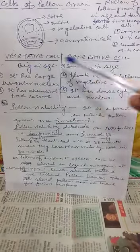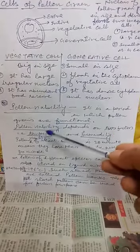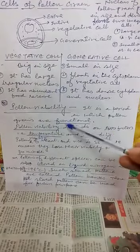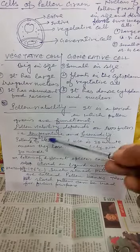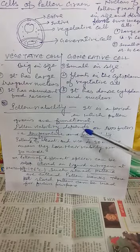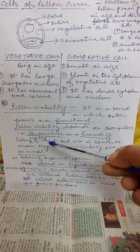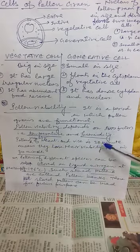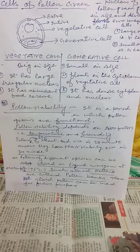The last topic is pollen viability. Pollen viability is the period in which pollen grains are functional. Pollen viability depends on two factors: temperature and humidity. These are the two main factors on which pollen viability depends. This viability period is different for pollens of different species.